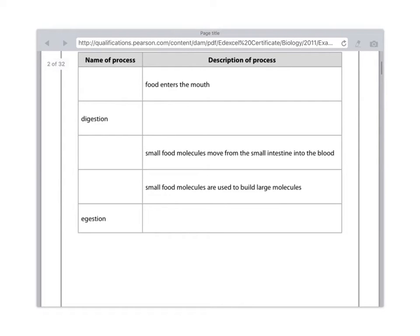And looking at the mark scheme, it's always good to look at mark schemes to have an idea of what they're looking for. They've underlined from the anus. So you have to write that part in order to get the mark. You have to be really, really precise.